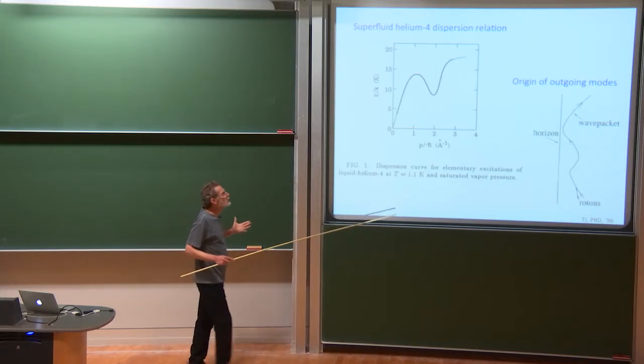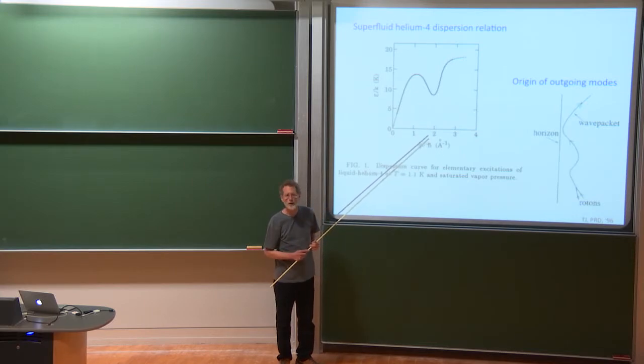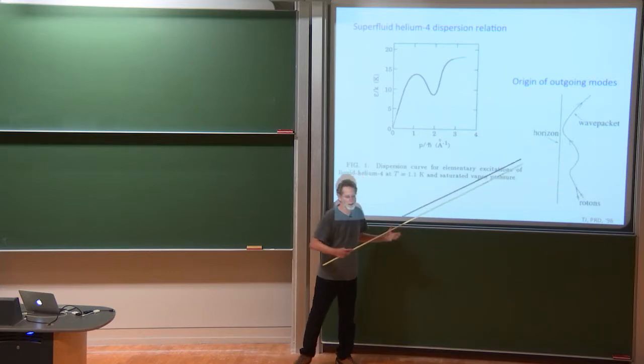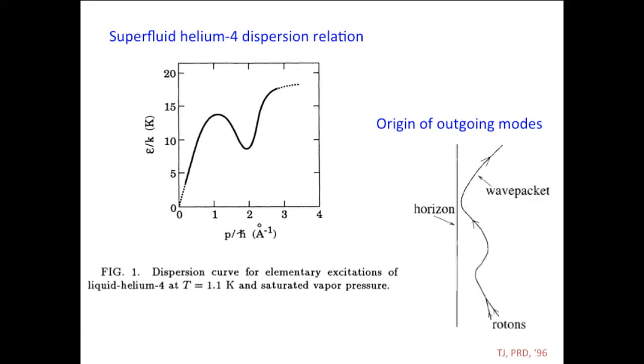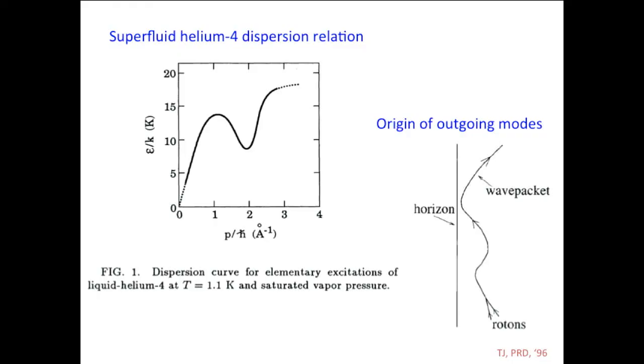Eventually, it gets pushed off to this part of the dispersion curve where it actually decays backwards in time into a pair of rotons. And you see that the origin of the outgoing modes in this superfluid helium-4 model is some kind of collection of microscopic excitations of the fluid that sort of come together teleologically because I put a final boundary condition to produce this outgoing mode.